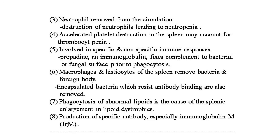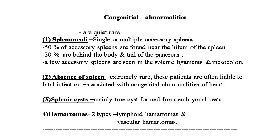Production of specific antibodies, especially IgM, is another splenic function. Congenital abnormalities of the spleen are quite rare. These include splenic coli — single or multiple accessory spleens, with 50% found near the hilum of the spleen and 30% behind the body and tail of the pancreas, with a few in the splenic ligaments and mesocolon. Second is absence of spleen, an extremely rare condition.